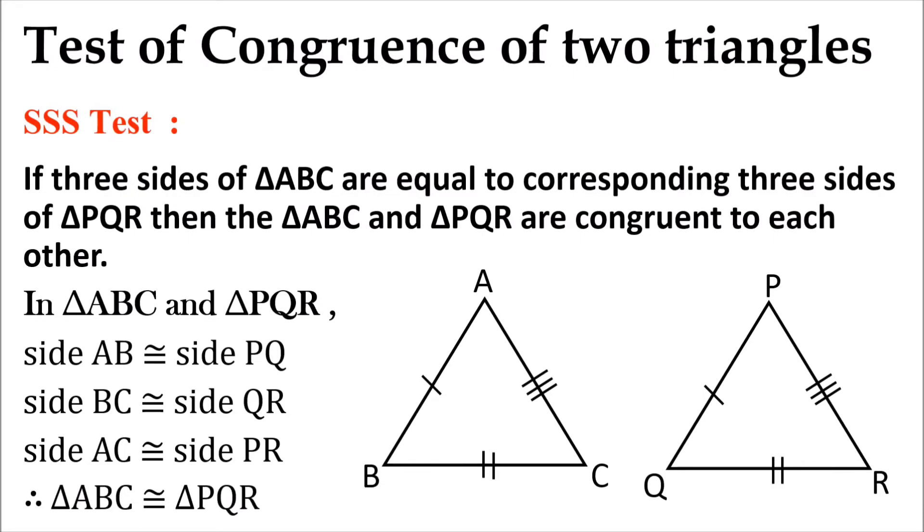You can see that all three sides of triangle ABC are congruent to corresponding all three sides of triangle PQR. Therefore, triangle ABC and triangle PQR are congruent under side-side-side test, that is SSS test. Thank you.